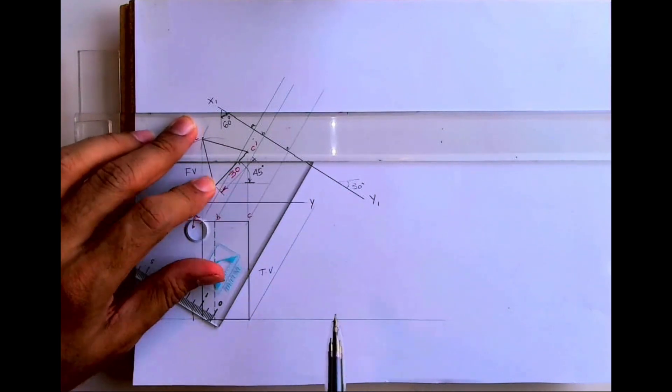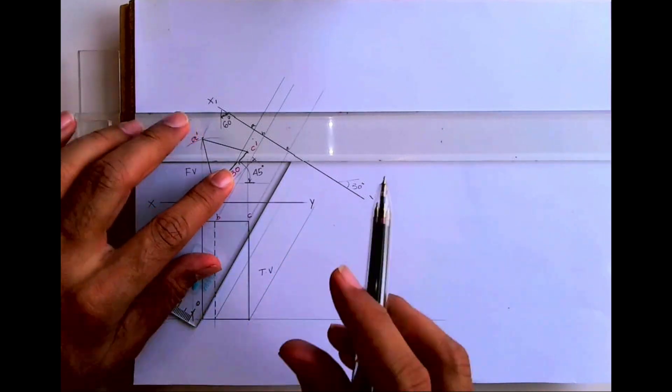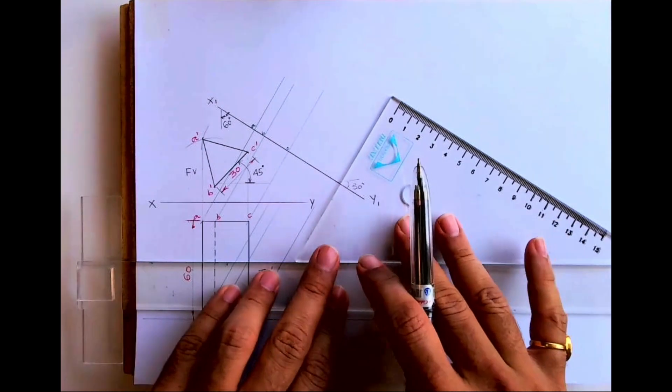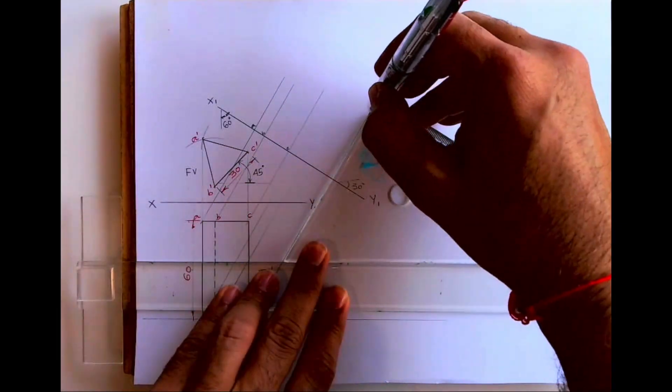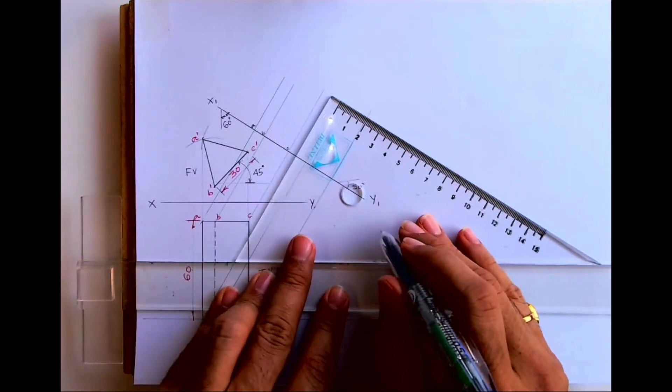Now see, when you project from down it is slightly shorter length, so I can extend like this. If you have a bigger set square then you can do it directly. If you have a smaller set square like me, you can extend like this.